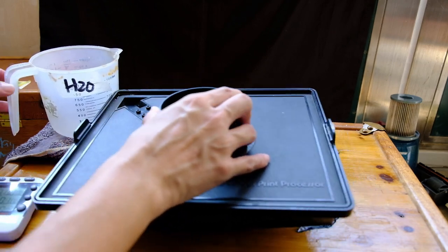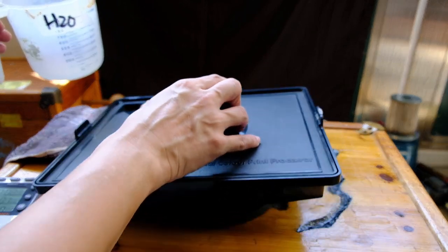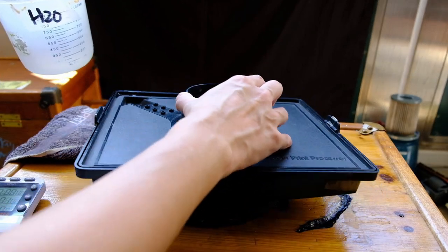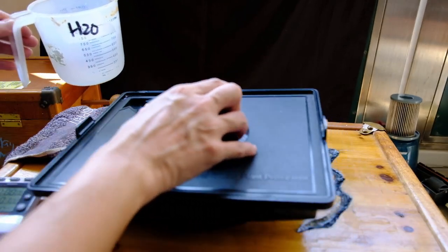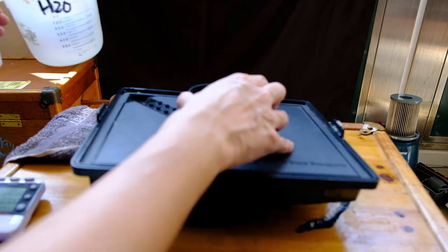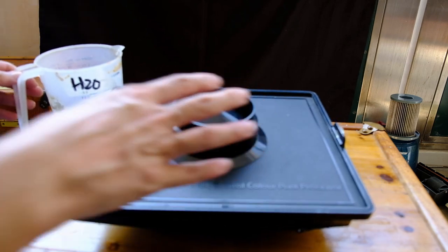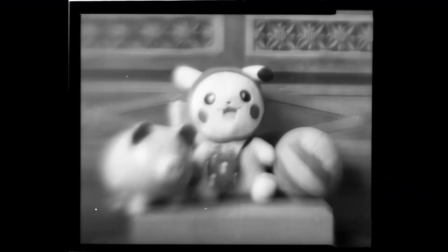Again, this is to wash away the fixer that's on the film. Later we'll do a final washing. We can see the negative here, and this is the negative inverted in Photoshop.